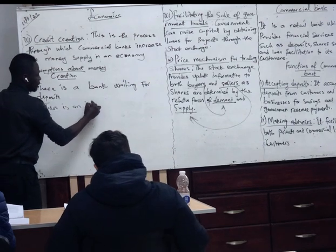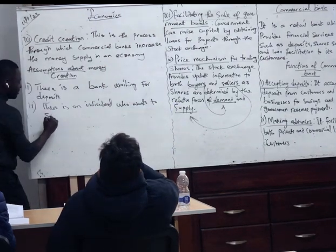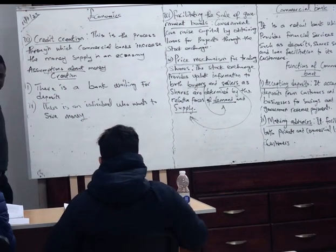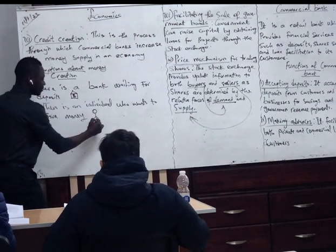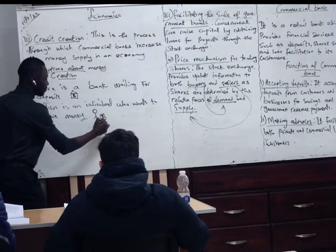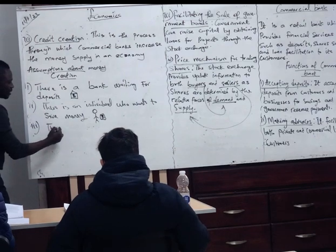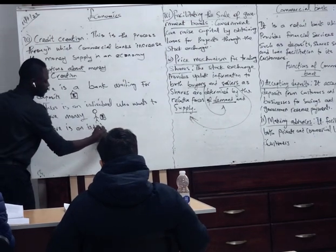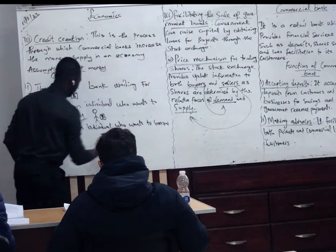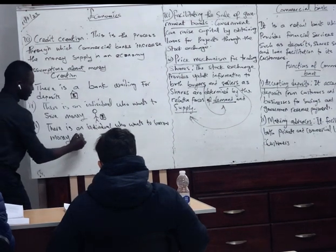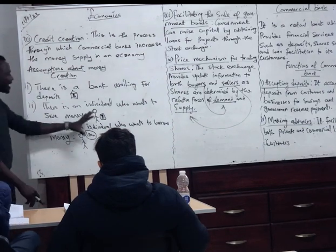The second assumption: there is an individual who wants to save money. The third assumption: there is an individual who wants to borrow money — his mind is about a loan, he is thinking of a loan. So these are the first three assumptions about money creation.